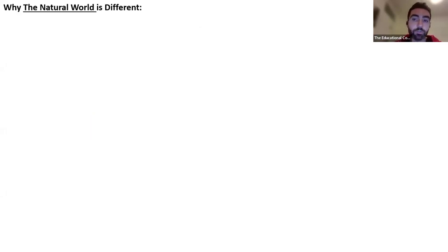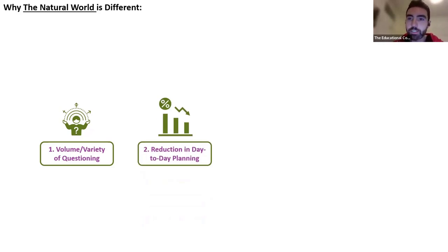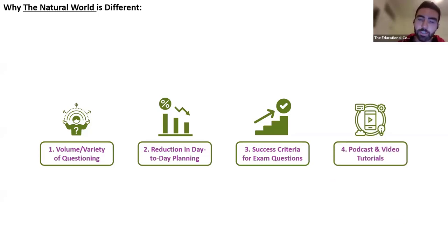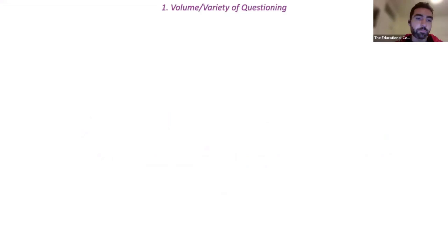The first thing we're going to look at is why The Natural World is different, because it underpins what we're covering today and the structure of the book and its resources. To summarise: four different points — the volume and variety of questioning available; reduction in day-to-day planning for teachers; success criteria for exam questions; and podcasts and video tutorials. The last two are what we're going to focus on today as they underpin improving how we teach the subcontinental region of Brazil.